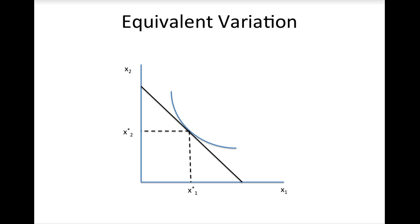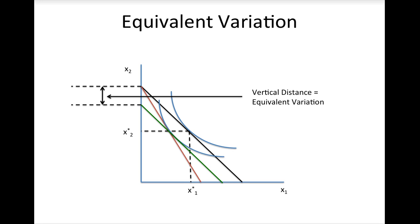To calculate the equivalent variation, start off by adjusting the budget line for the price increase as you did before. Now, instead of shifting the new budget line up to meet the old indifference curve, shift the old budget line down until it is tangent to the new indifference curve. The green budget line is the shifted budget line in this diagram.